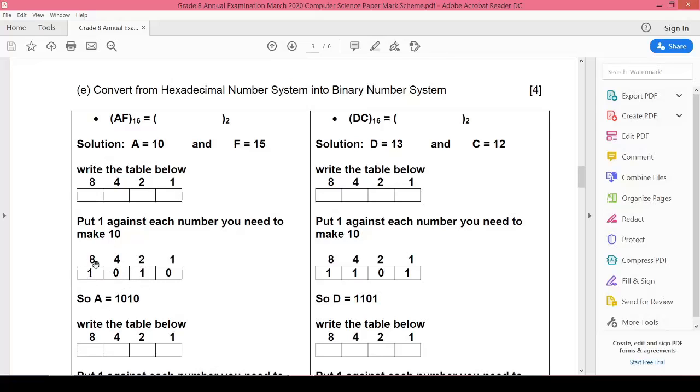So 8 and 2 makes 10, so it means the binary equivalent for A is 1010.